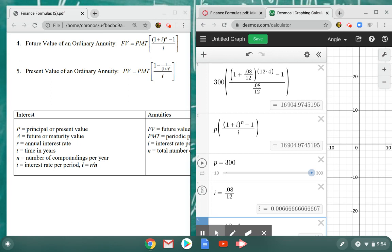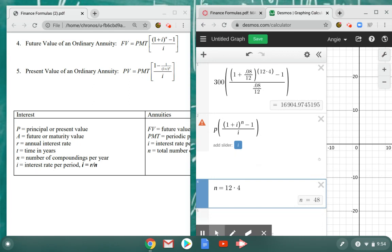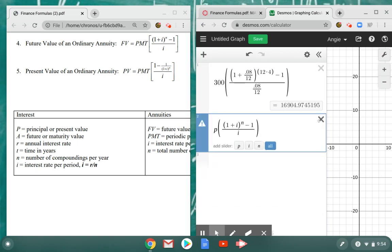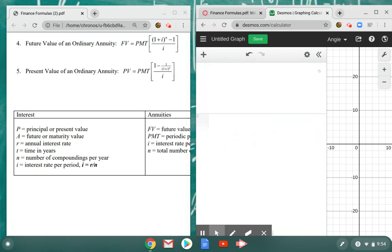This is the future value formula. Let's go ahead and redo this for the present value formula. I'm going to delete what I've got here so far and start over so I've got a clean slate here in Desmos. I'm going to do the very same thing with the present value formula.